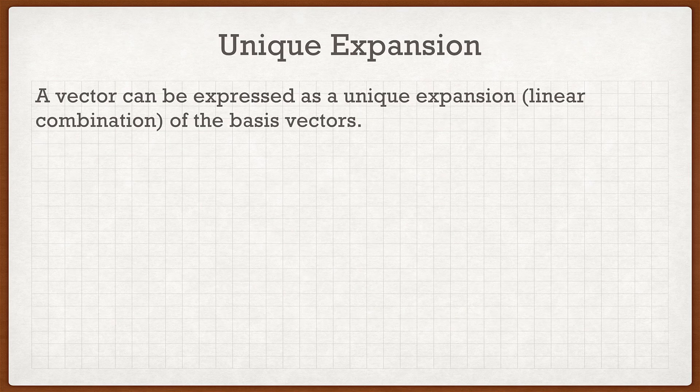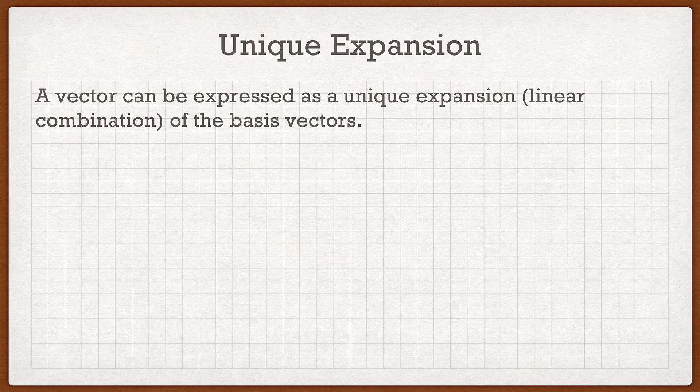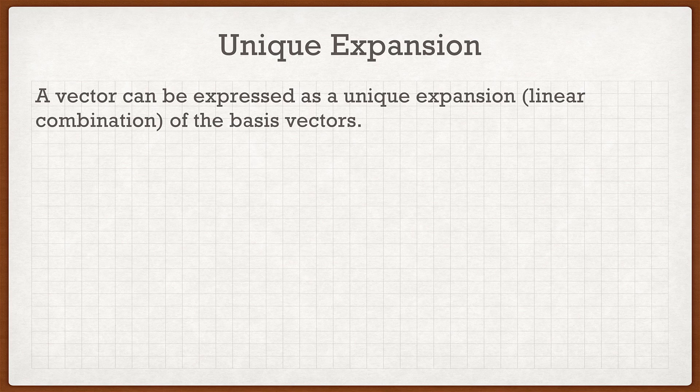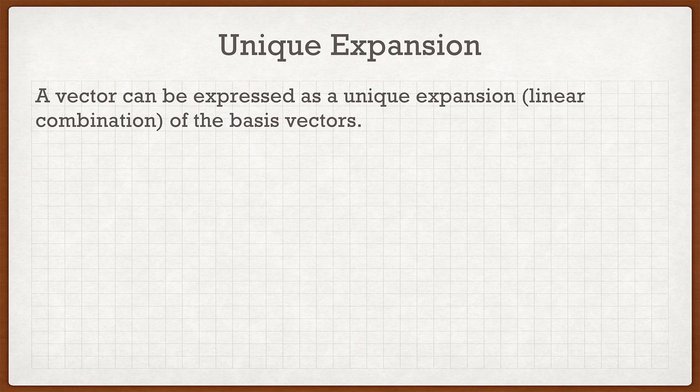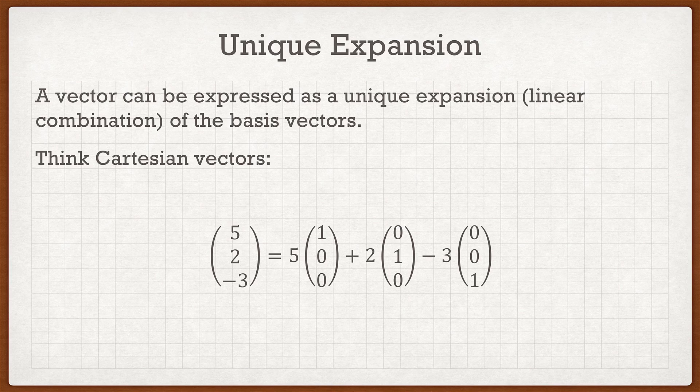Now, unique expansion. This is the one thing that you guys may not really know what it is, but you'll find it's actually pretty easy. A vector can be expressed as a unique expansion or linear combination of the basis vectors. Just like the definition of linearly independence, that may sound like a bunch of nothing. So let's think about Cartesian vectors.